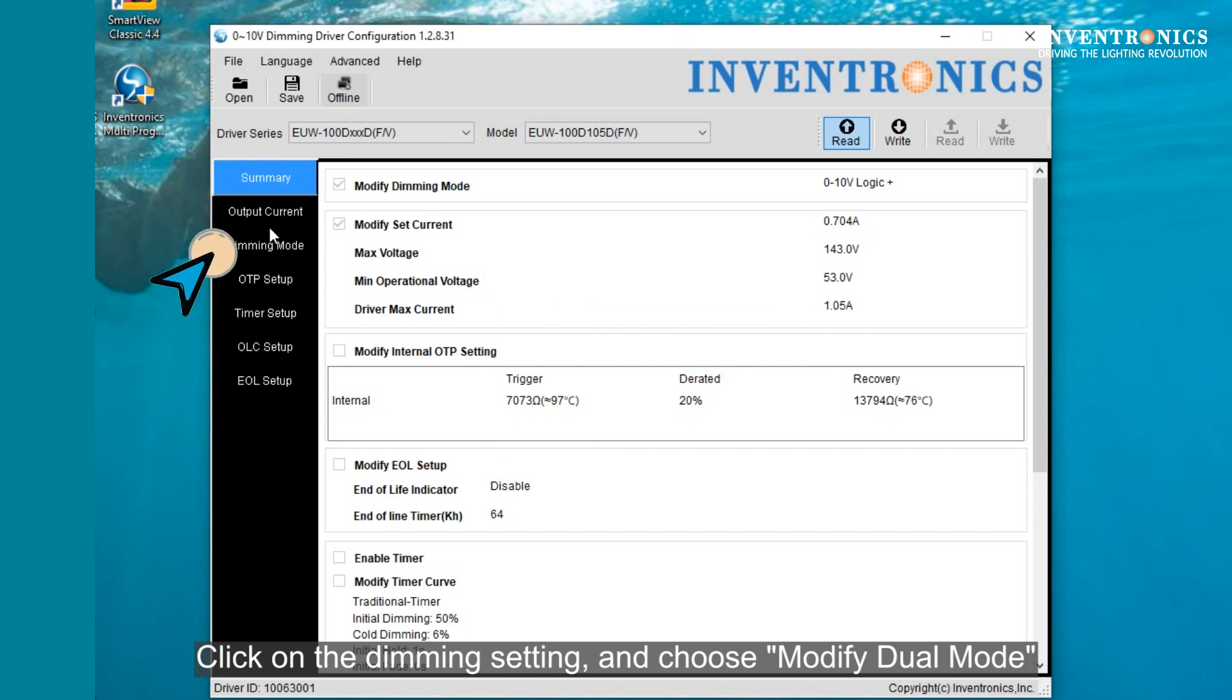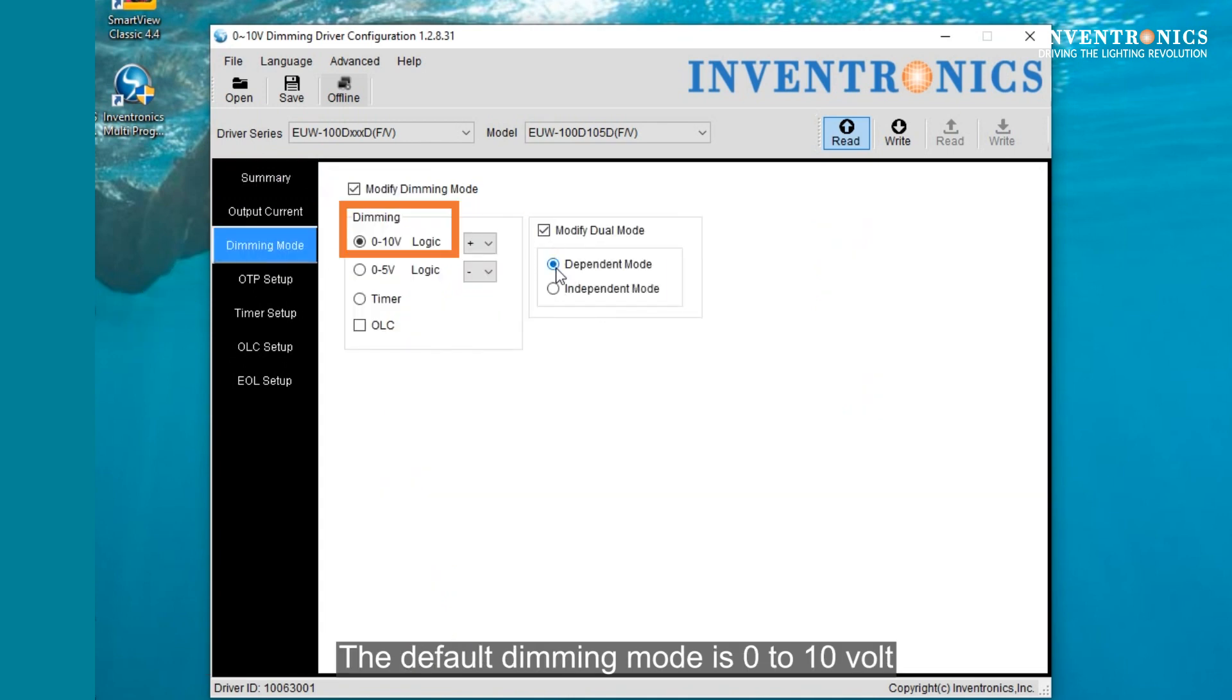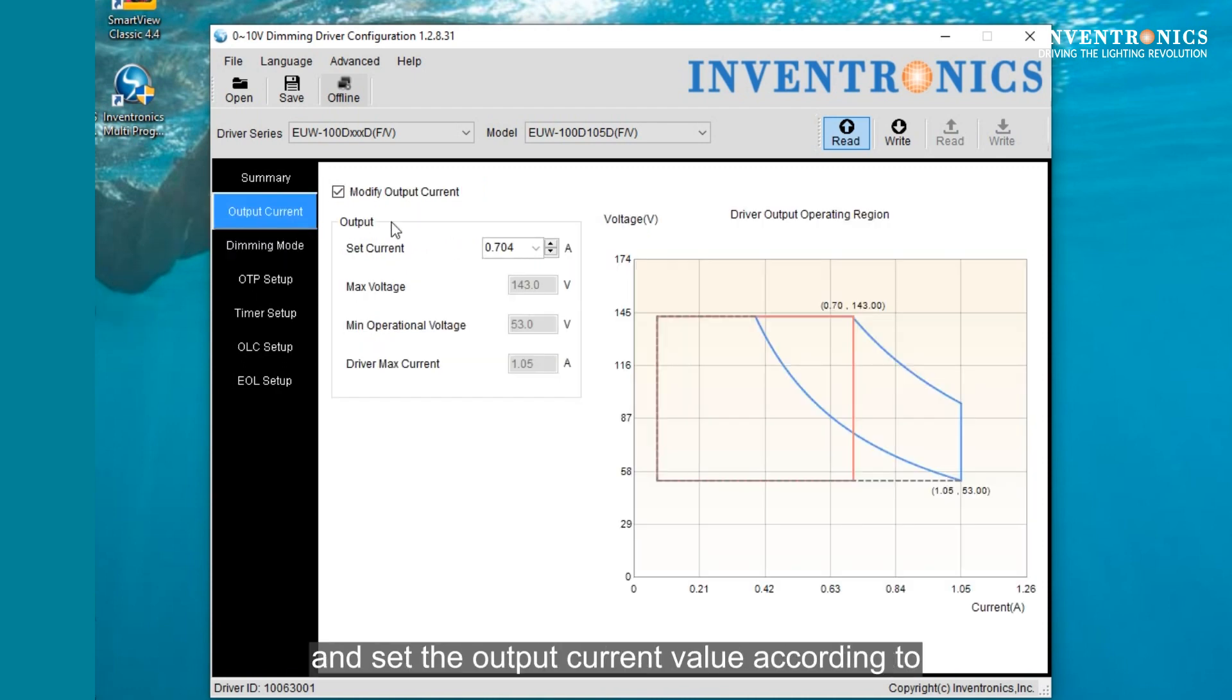Then click on the Dimming setting and choose Modify Dual Mode. The default dimming mode is 0 to 10 volt. Then, you will click on the Output Current setting and set the current output value according to the expected power of the luminaire.